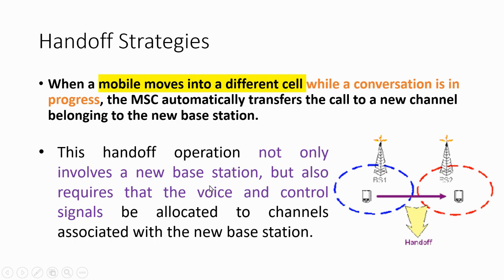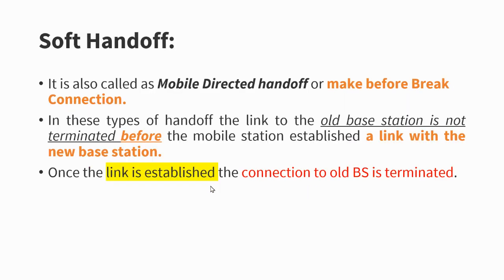Handoff operation not only involves the new base station, but also requires a full duplex channel. We were talking about a 25 kilohertz simplex channel; for a duplex channel we calculated 50 kilohertz. Similarly, we need a new channel from the new base station as well as a control channel. The control channel's main function includes billing and call establishment, and control channels also participate in the handoff. There should be a minimum of one channel allocation from the new base station for handoff to happen.